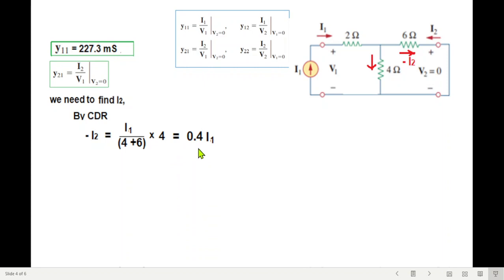So it will be 0.4 i1. Now we need to get v1, so we'll use the relation of i1 and v1 that we had already derived from the circuit. From the circuit, we derived i1 is v1 divided by 4.4. We'll plug in this value here.